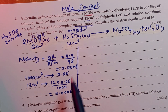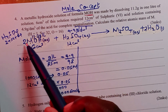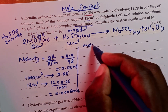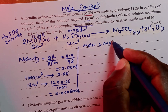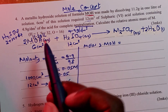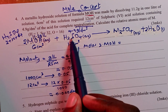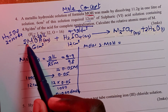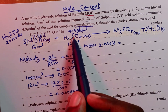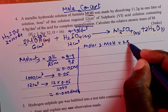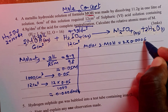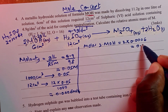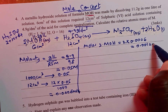Now that we know the number of moles of the acid, we can use the mole ratio to get the number of moles of the base. To get moles of M hydroxide using the mole ratio, we multiply the moles of acid by 2, since the mole ratio of base to acid is 2:1. So 2 × 0.0006 gives us 0.0012 moles of M hydroxide.